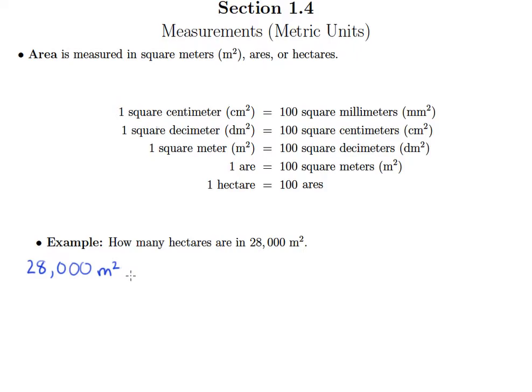Now let's take a look at what we have up here for equivalencies. The only thing hectares are equated to are ares. We can't directly go from square meters to hectares, but we do know how many square meters are in one are. So we'll use that first and get to ares, and then that'll allow us to move into hectares.